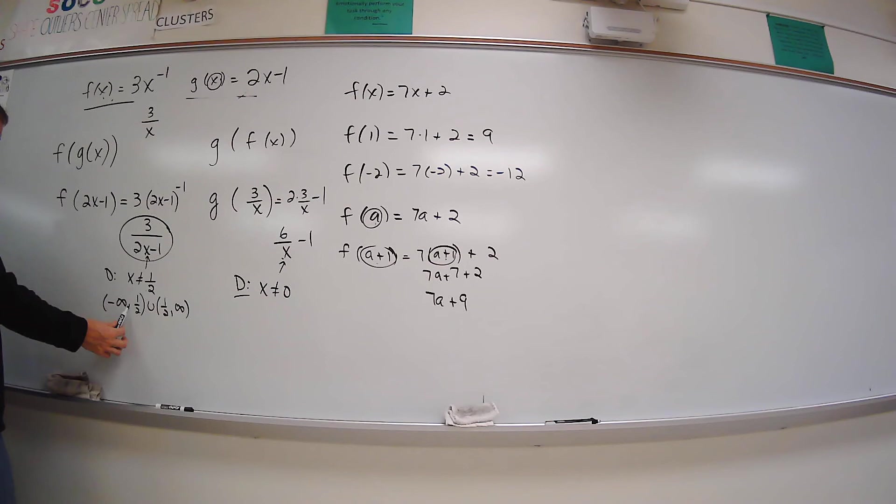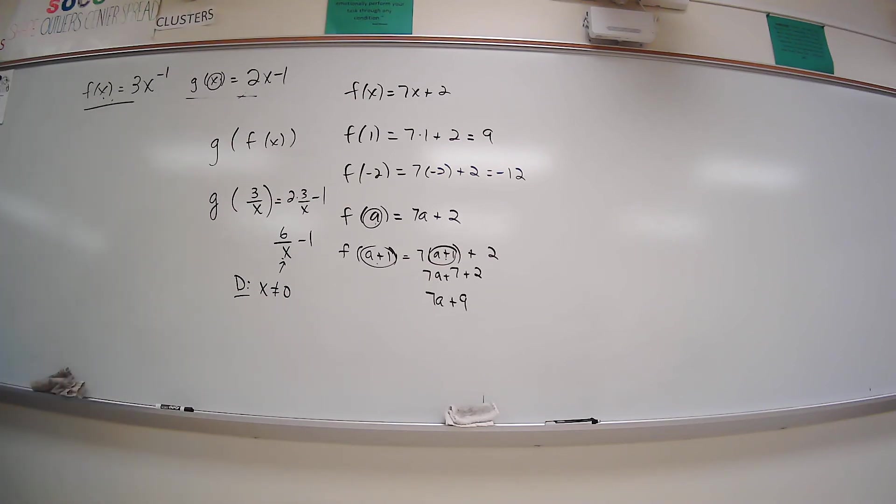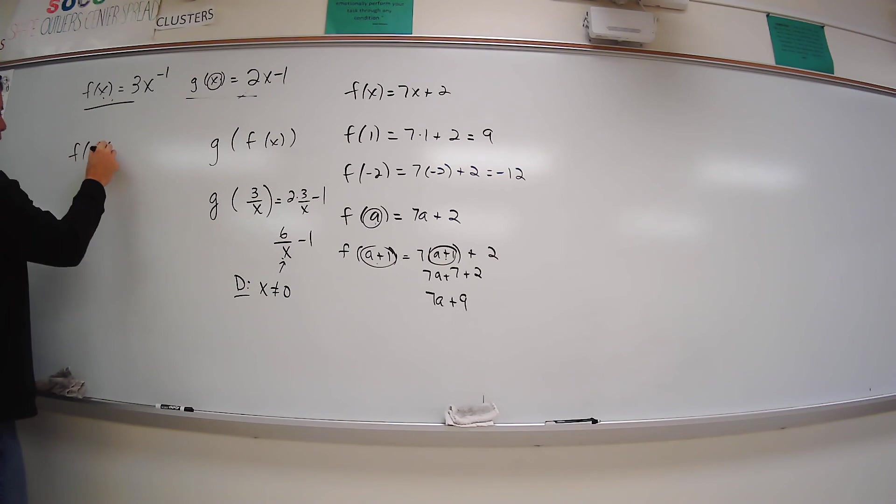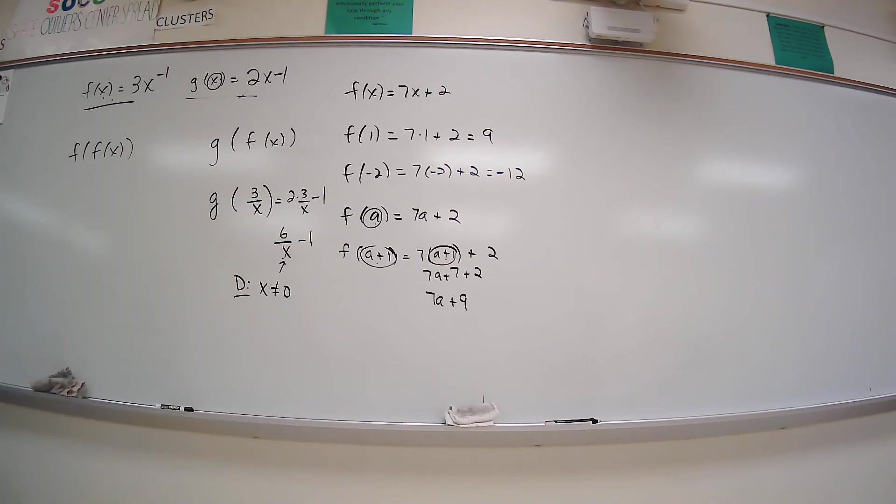And then you could also write it as negative infinity comma 0 to 0 to infinity. One more? One more, one more. Let's see. Let's do f of f of x. Let's do f of f of x. And I think I use the same functions for that.